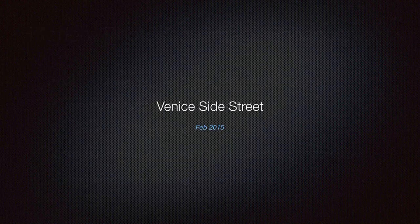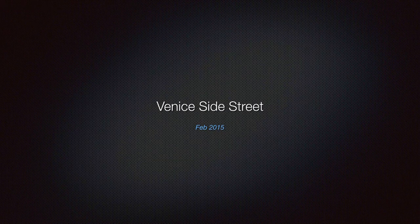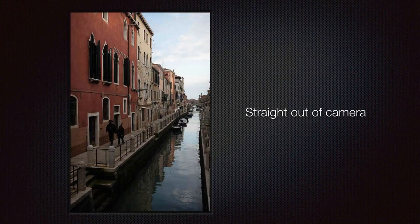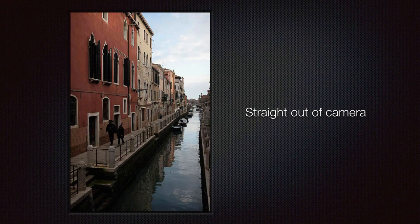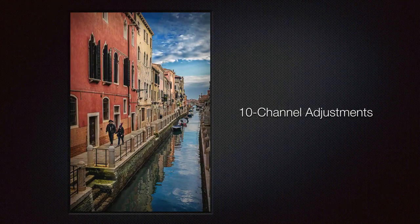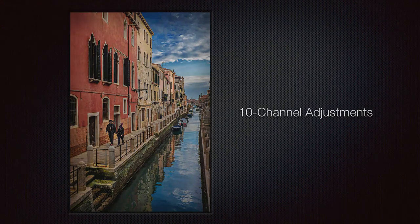Our project for this exploration is a photograph taken in Venice, Italy during the week before Carnival in February 2015. We will look at how we go from the straight-out-of-camera shot to basic raw enhancements in Lightroom, and finally the Photoshop fine-tuning using the 10-channel workflow. We'll start in Lightroom.